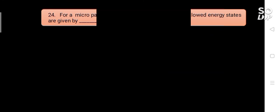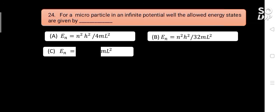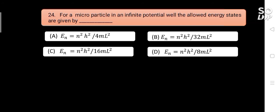For a microparticle in an infinite potential well, the allowed energy states are given by blank. Options are: A) En = n²h²/4mL², B) En = n²h²/30mL², C) En = n²h²/16mL², D) En = n²h²/8mL². Answer is D) En = n²h²/8mL².